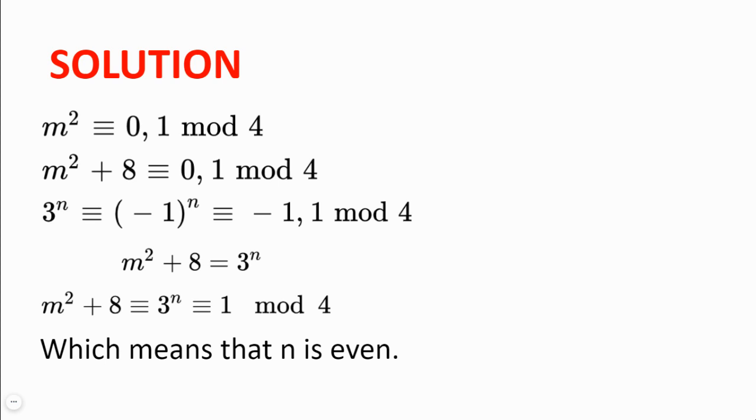Now, 3 to the power of n is congruent to minus 1 to the power of n, which is congruent to minus 1 if n is odd and 1 if n is even. Since m squared plus 8 is equal to 3 to the power of n, m squared plus 8 is congruent to 3 to the power of n modulo 4, which we can see only happens if m squared plus 8 is congruent to 1 and 3 to the power of n is congruent to 1, which means that n must be even.